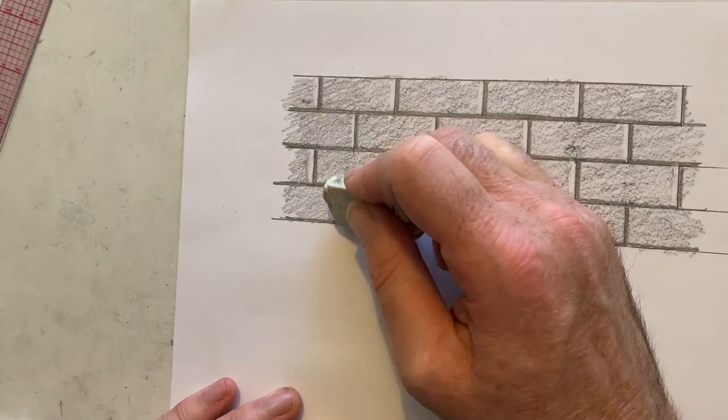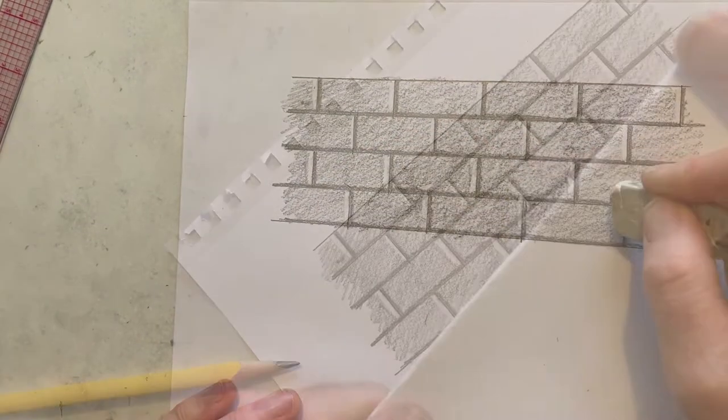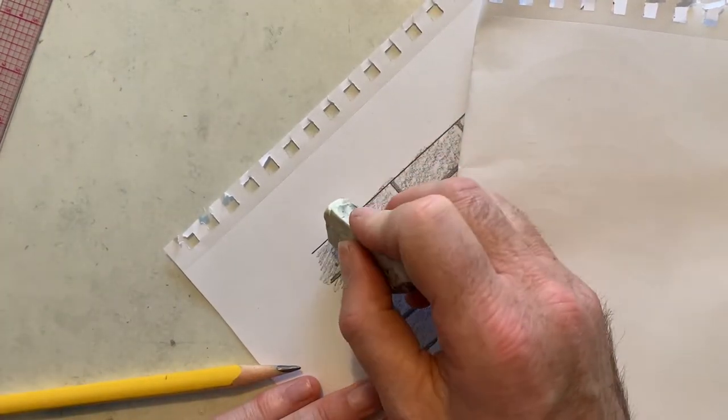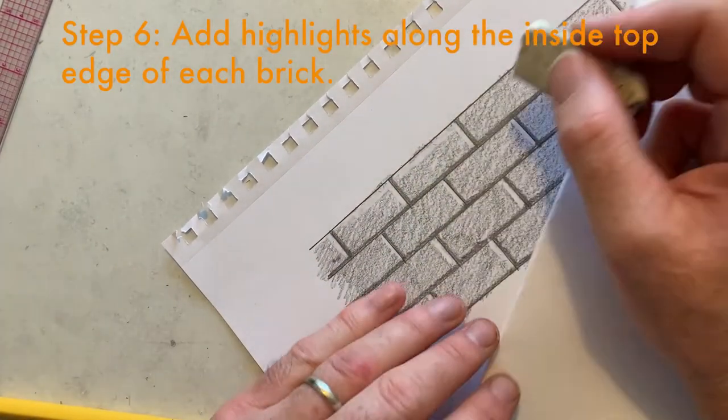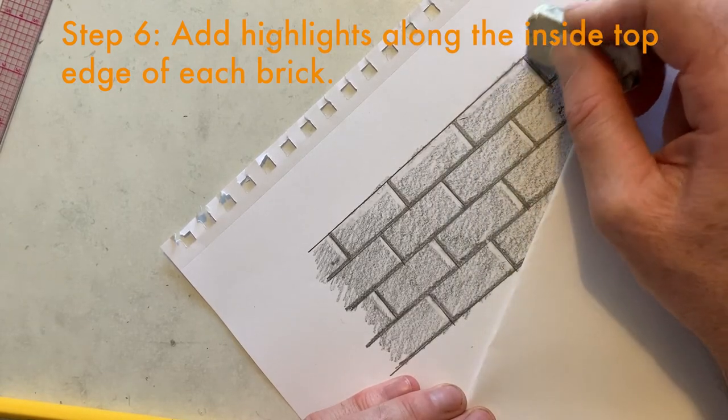Either way, like I said, you can always go back in and reshape those highlights later with shading. Now I'll go back in and I'll add highlights along the inside top edge of each brick.